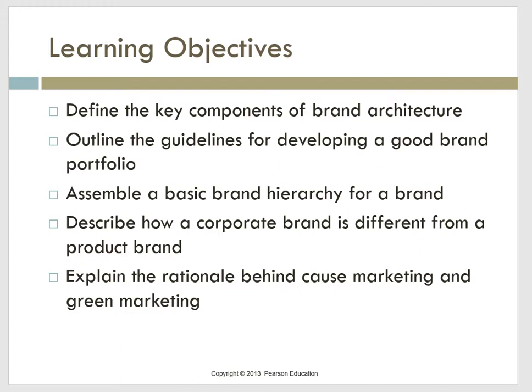Brand hierarchy visually illustrates the possible relationships that can be formed among a firm's products through the selection of common and distinctive brand elements. The levels may include the corporate brand at the top, followed by a family brand used in more than one product category, an individual brand restricted to one product category, and a modifier that designates a specific item or model. Each name has the potential to impact the equity of brands at levels above and below it.